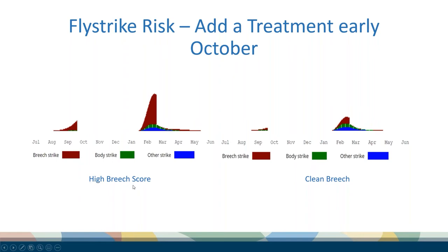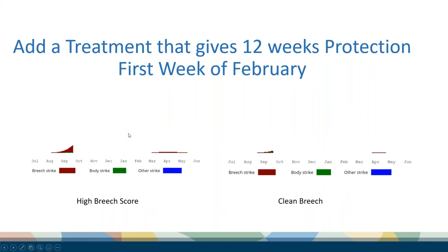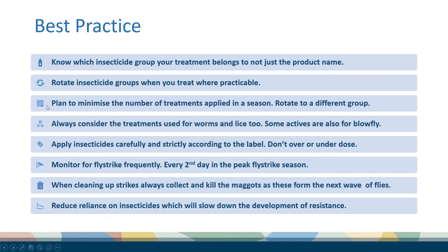With a clean breech, that breach strike risk is reduced even further. If I add a treatment in the first week of February giving up to 12 weeks protection, the risk is virtually removed regardless of breech score. I think last year there were unseasonal rains because this producer had treated in April. But from the modelling, based on this 30-year average data, that treatment in April would have afforded no protection because according to the model there was no risk at that time. So you need to know: are you experiencing unseasonal conditions for your area?